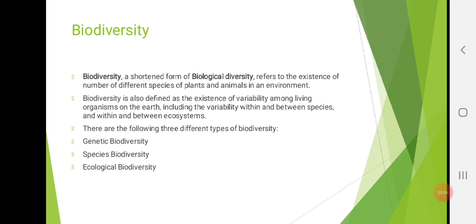Then, biodiversity. After ecosystem, we have started with biodiversity. What is biodiversity? Biodiversity is a shortened form of biological diversity. Biodiversity refers to the existence of number of different species of plants and animals in an environment. We know environment. Environment consists of biotic and abiotic components. So, living things can be animals, plants. But, we can see n number of plants and animals. Different variety of plants and animals. So, they are only called as biodiversity.